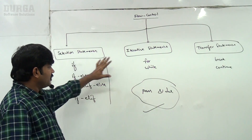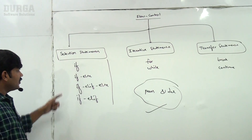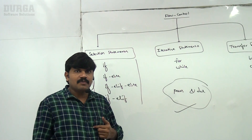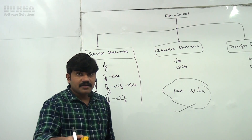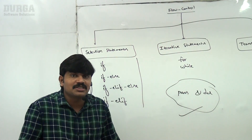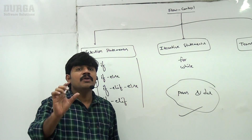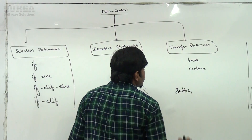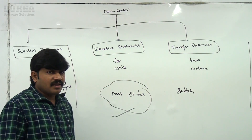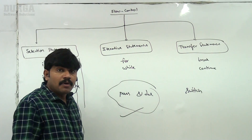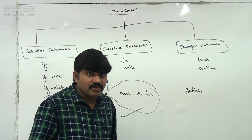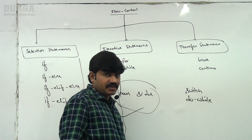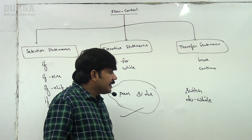You might ask: where is the switch statement? Coming from Java or C, you know switch exists there. In Python, there is no switch statement. Similarly, do-while exists in C and Java, but Python has no do-while loop — only for loop and while loop.